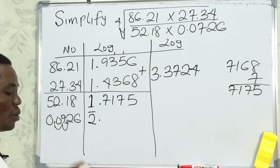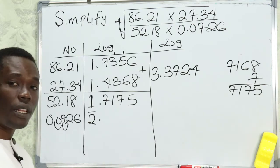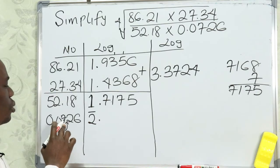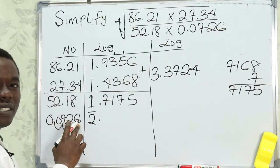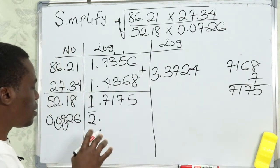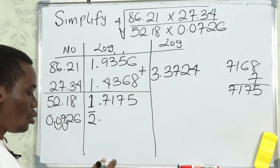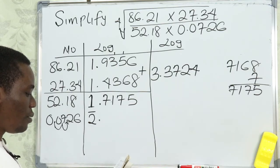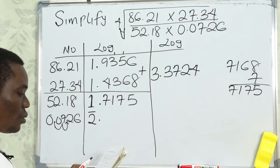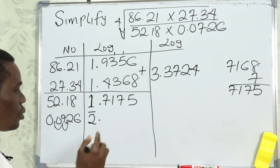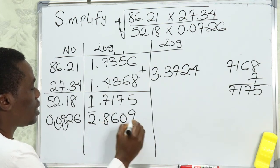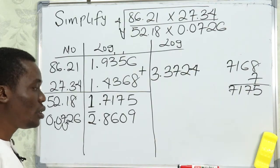For 0.0726, because the logarithm of numbers starts from 10, we look at 72 under column 6. There is no difference this time. The value of 72 under 6 gives us 8609. So we have 8609 with no difference correction, giving us 2̄.8609 (characteristic negative 2).